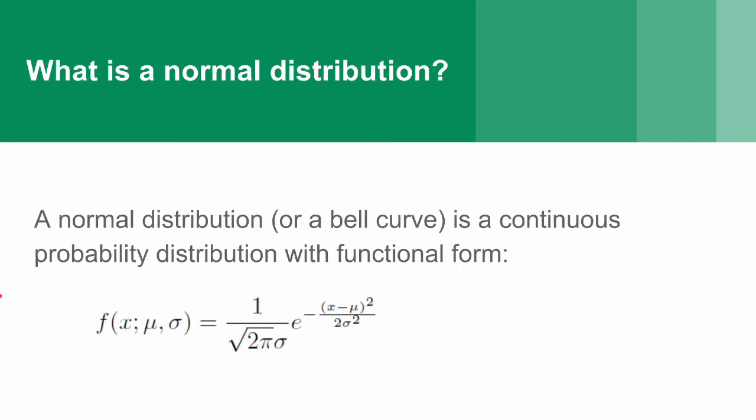A normal distribution, also called a bell curve, is a continuous probability distribution, and it has this functional form here.